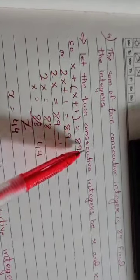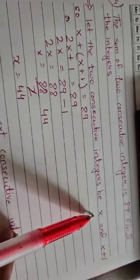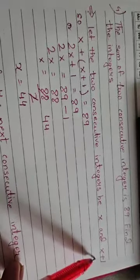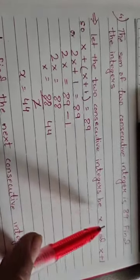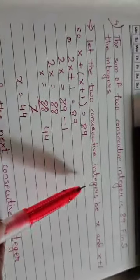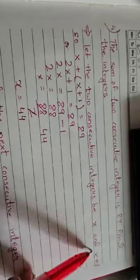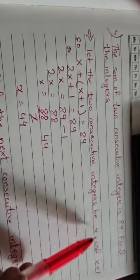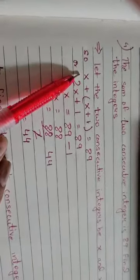We have to assume that the two consecutive integers are x and x plus 1. You cannot take it as x or y. You will take x and x plus 1. So one is x and the other is x plus 1. You have to take the sum of the two, so the formula goes like